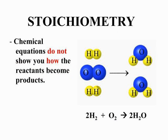Stoichiometry equations and chemical equations do not show you how the reactants become products. You do not see how the bonds are broken between the reactants and then reformed in the products. But what you do see is the beginning reactants and the final products and the mathematical relationship between them.